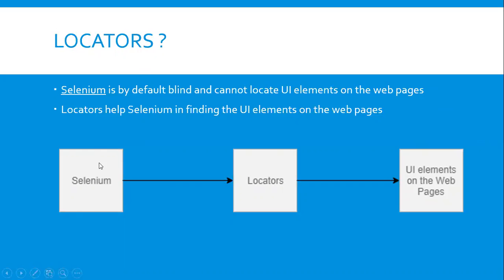Selenium is by default blind. That means Selenium cannot locate the elements on web pages — it cannot see buttons, checkbox options, or any other UI elements. It cannot locate and perform operations on them. So what will find or locate the elements? We have to use something known as locators. Locators are what are required for locating elements on web pages like buttons and checkboxes.